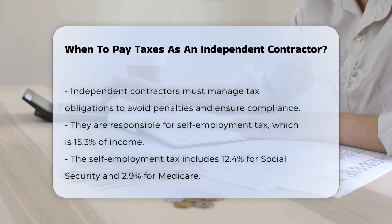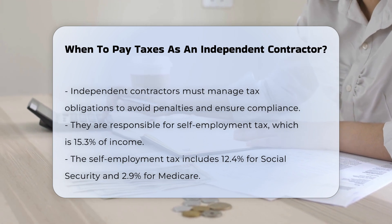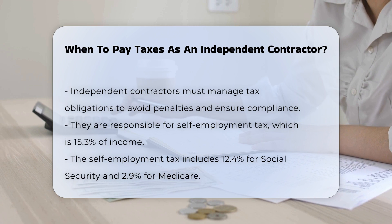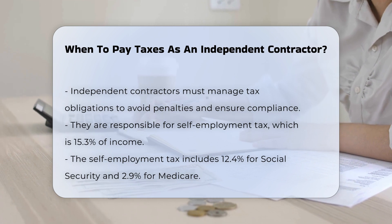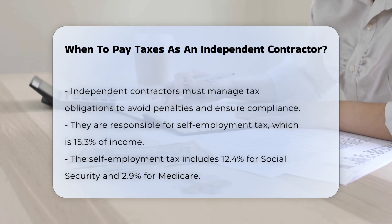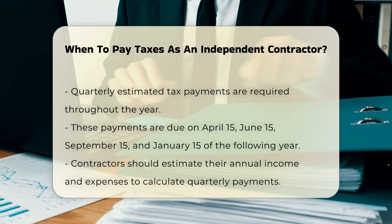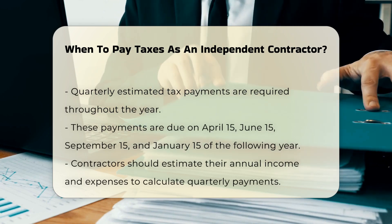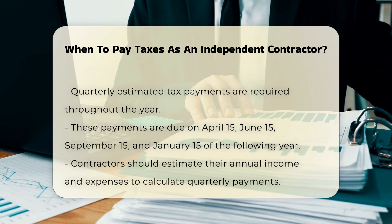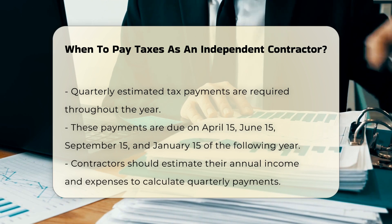Quarterly Estimated Tax Payments. The U.S. tax system is a pay-as-you-go system, meaning independent contractors must make tax payments regularly throughout the year. These payments are due on April 15th, June 15th, September 15th, and January 15th of the following year.